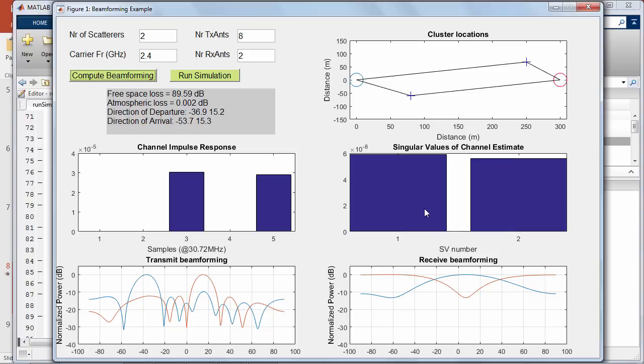and the SVD of the channel has two similarly large singular values. The bottom left picture is the view of the transmit beamforming based on the SVD. As you can expect,